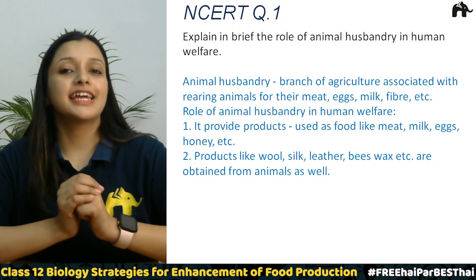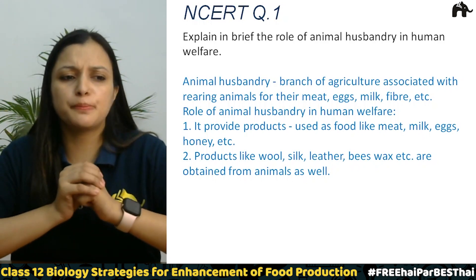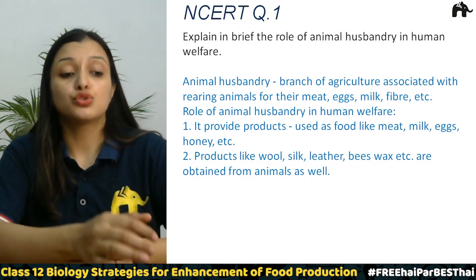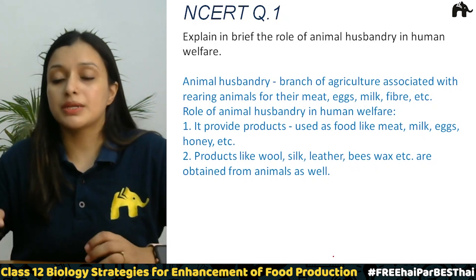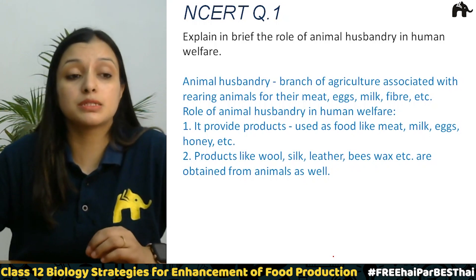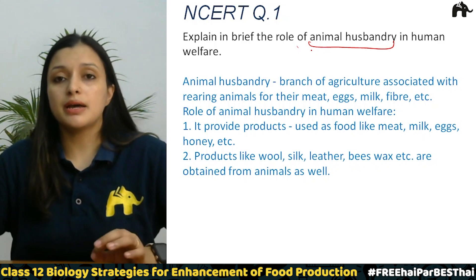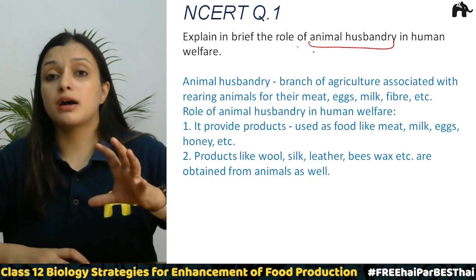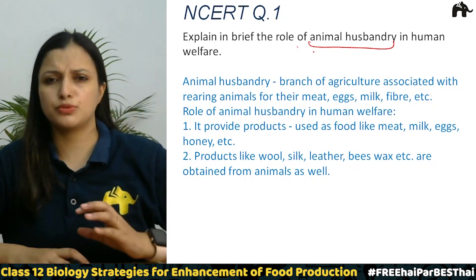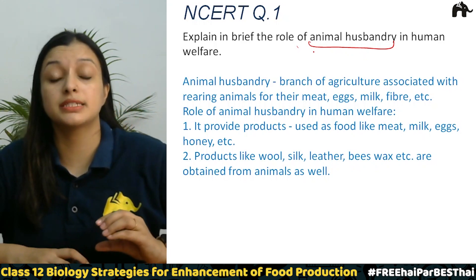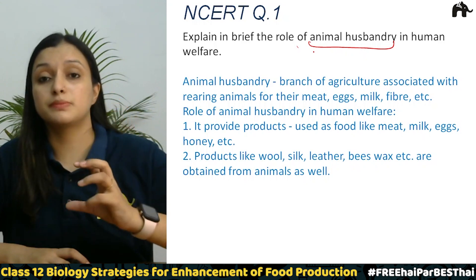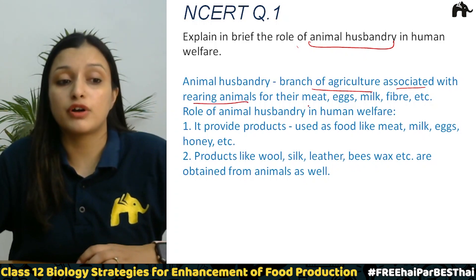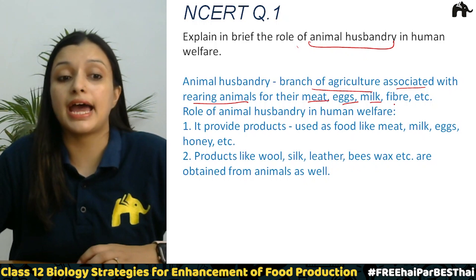Let's start with question number one. Question number one is: Explain in brief the role of animal husbandry in human welfare. So first it is important to know what animal husbandry is. Animal husbandry is a branch of agriculture which is associated with rearing of animals for their meat, eggs, milk, and fiber.